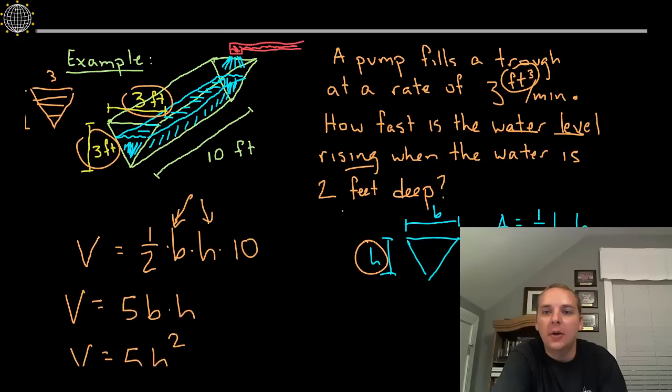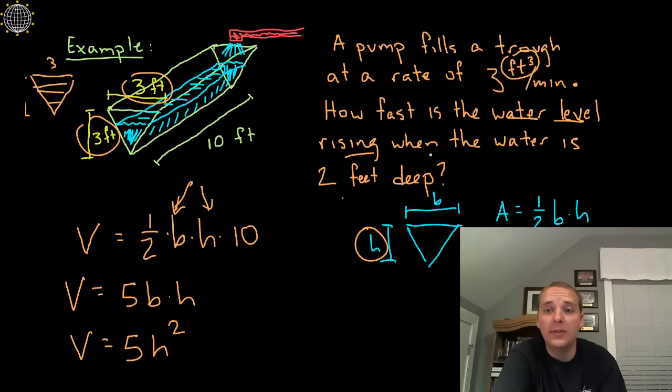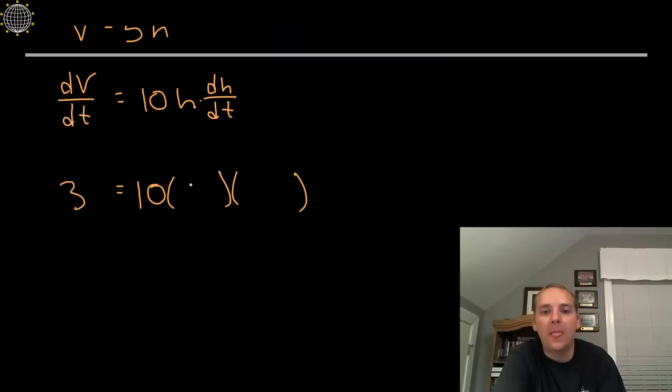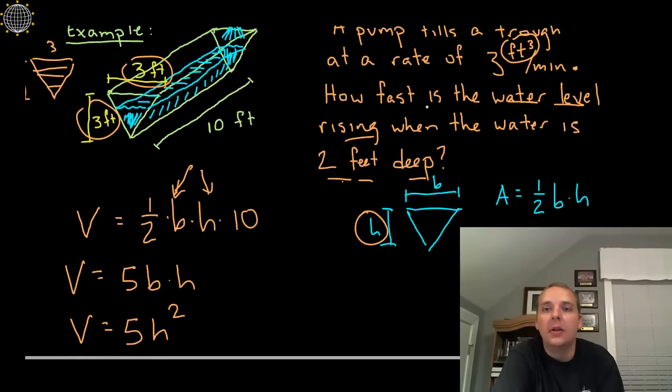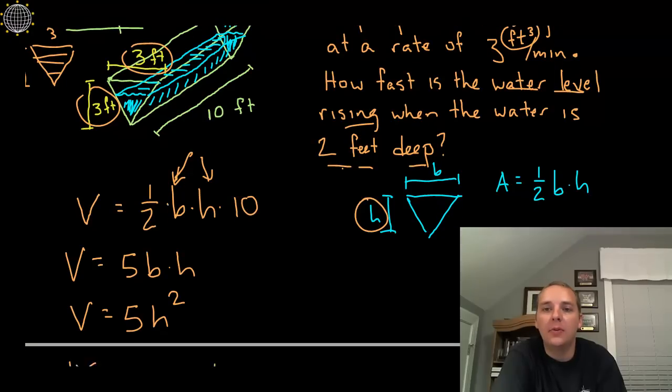Alright, so what's the H? Well, it says how fast is the water level rising when the water is 2 feet deep, 2 feet deep. That sounds like H. And then they say, the question, how fast, now fast is another word for rate, so that's a little key word. When you hear the word fast, or slow, or rate of change, they're talking about one of the D something DTs. So they're saying, how fast is the water level rising? Well that sounds like dH/dT.